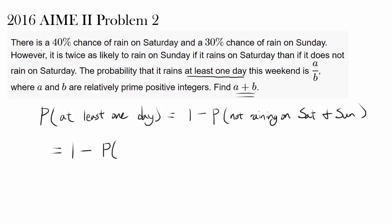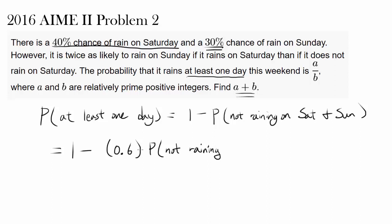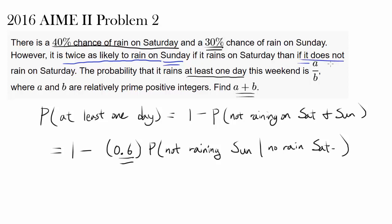The probability of not raining on Saturday is easy to find. We know the probability of raining on Saturday is 40%, so not raining has to be 60%. But is the probability of not raining on Sunday simply 0.7? The answer is no, not at all. If you do that, you're going to get the wrong answer. We need to find the probability of not raining on Sunday given that it did not rain on Saturday, because the probability of not raining on Sunday depends on whether it rained on Saturday. We've got to make sure we specify that it did not rain on Saturday.